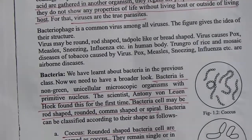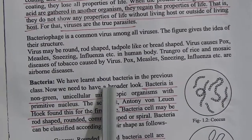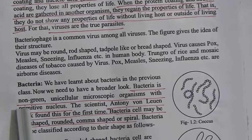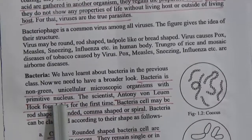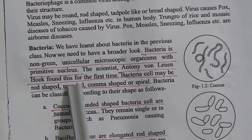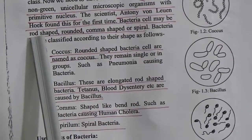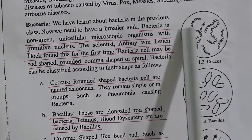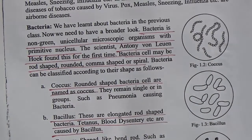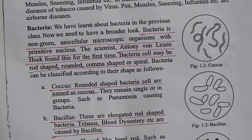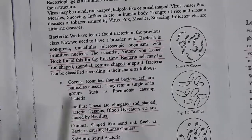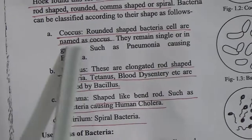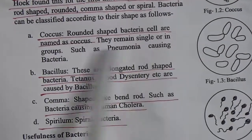Now, bacteria. We have learned about bacteria in the previous class. Bacteria is a non-green unicellular microscopic organism with a primitive nucleus. The scientist Antony van Leeuwenhoek found this for the first time. A bacteria cell may be rod-shaped, rounded, comma-shaped, or spiral. Bacteria can be classified according to their shape.